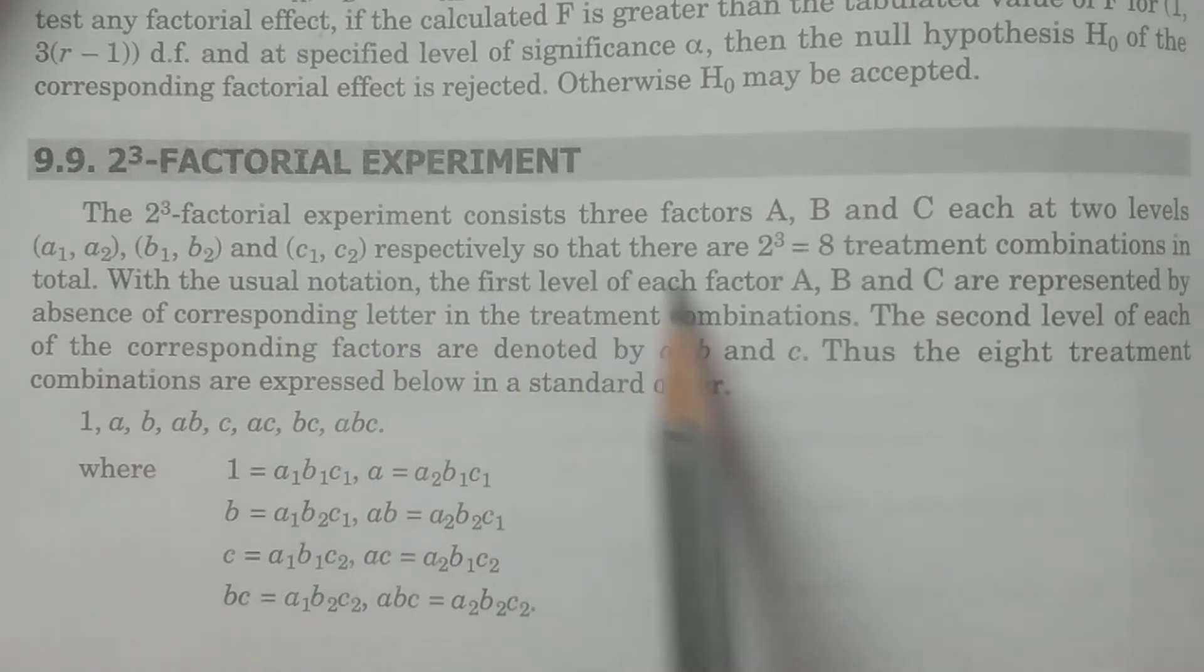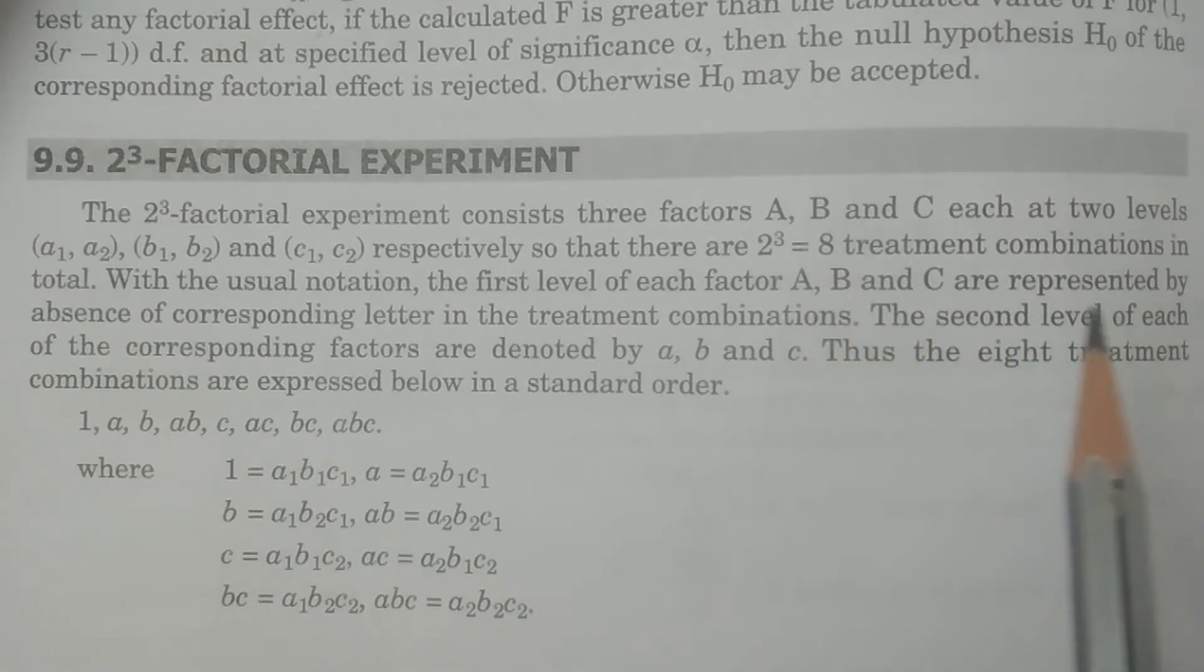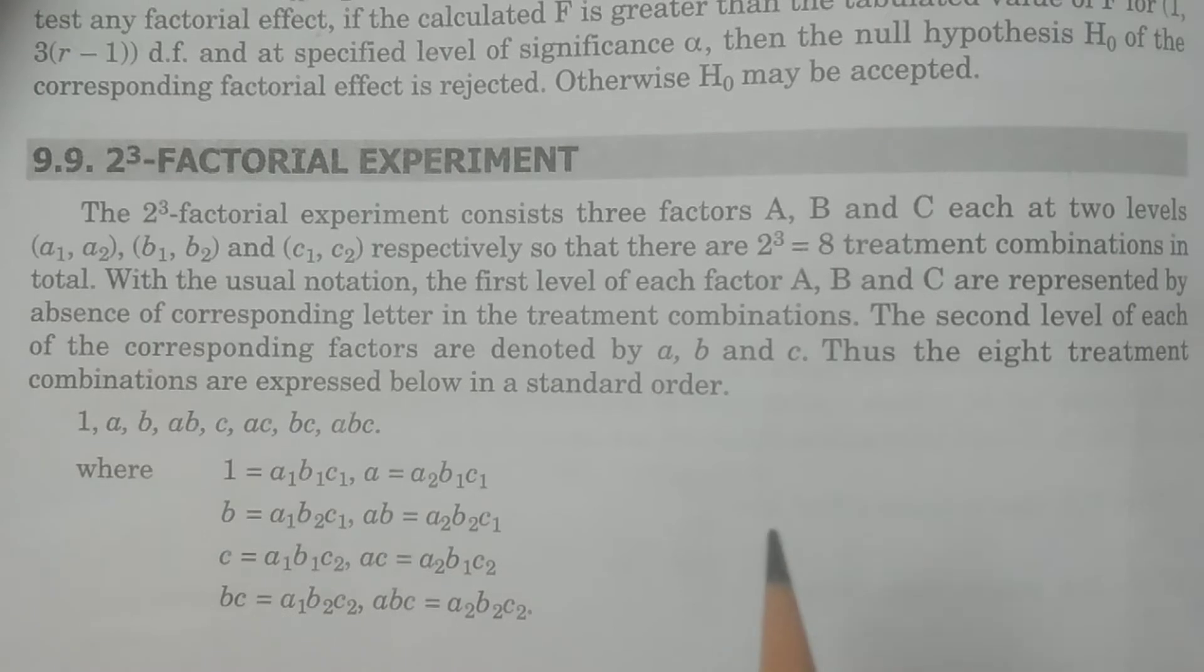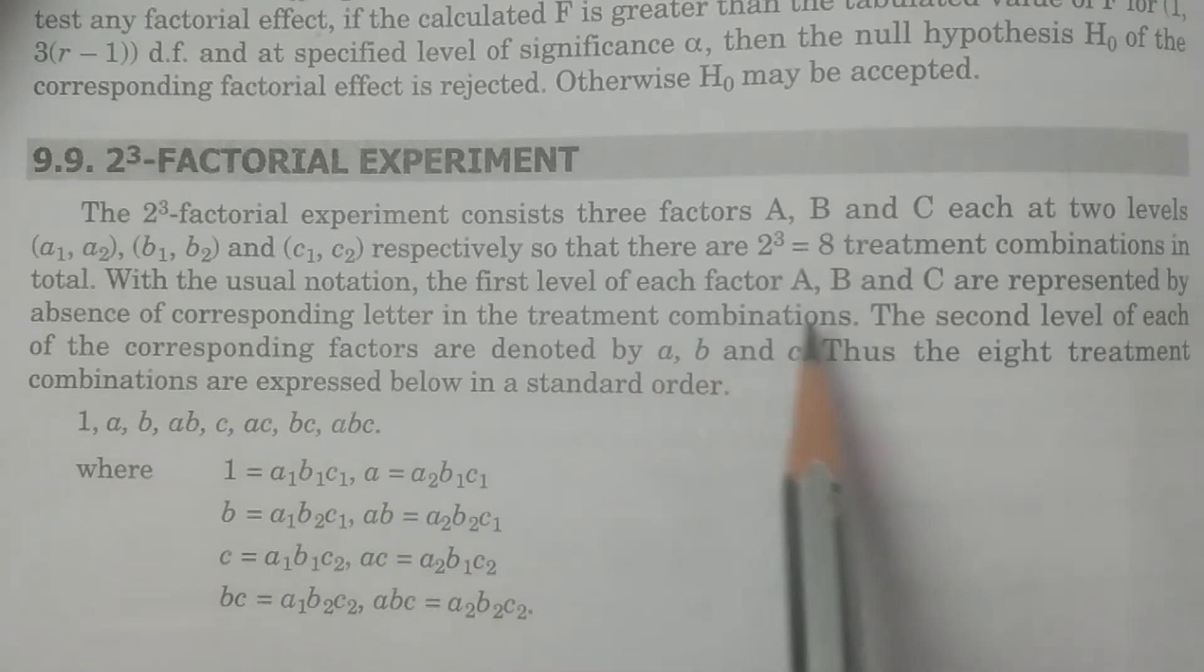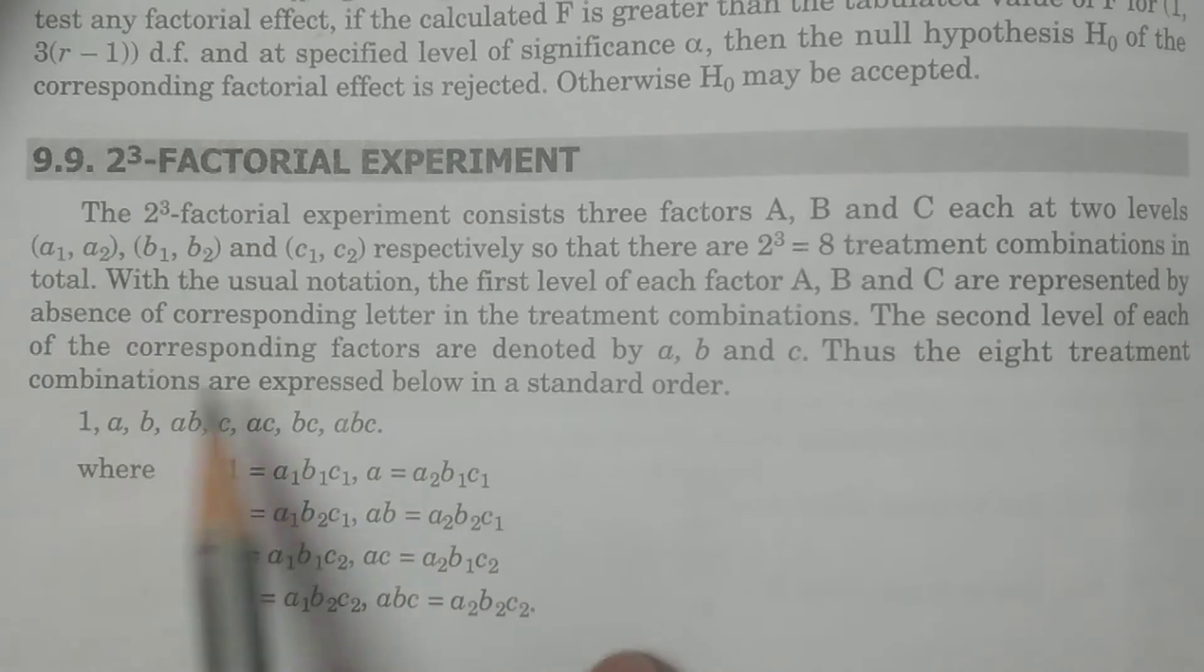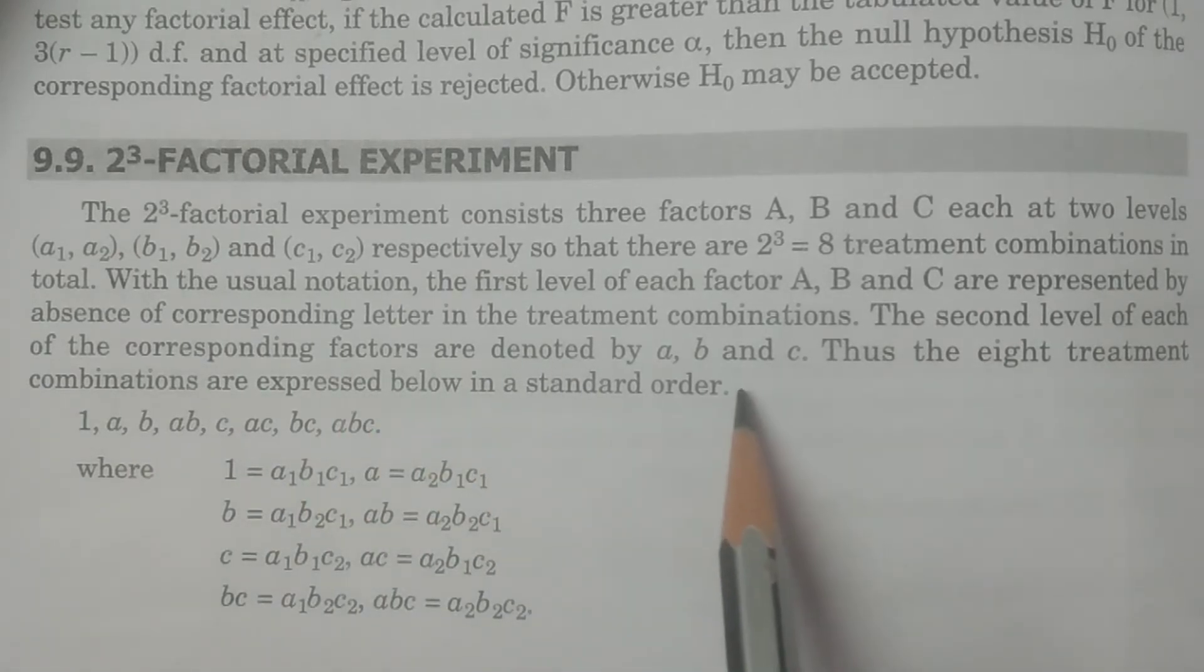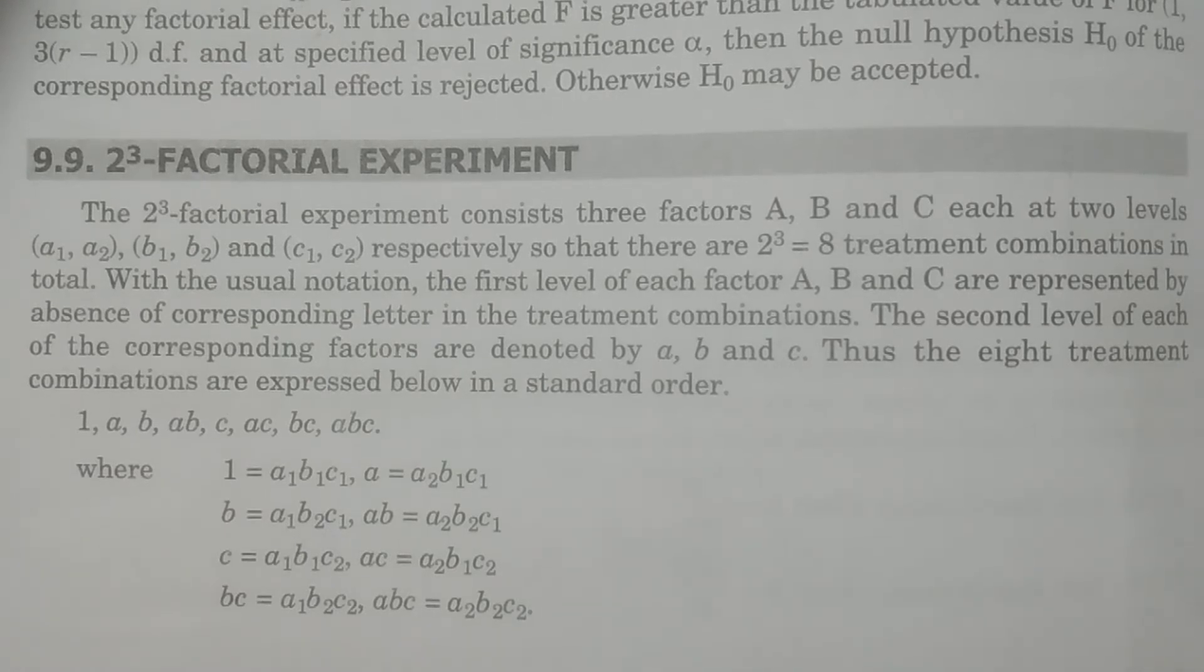So that there are 2 cube equals 8 treatment combinations. We see the treatment combinations here, which was specified very clearly. The first level of each factor A, B and C are represented by absence of the corresponding letter in the treatment combinations.